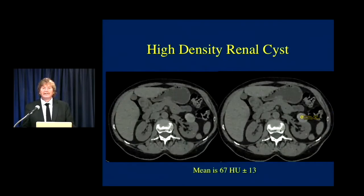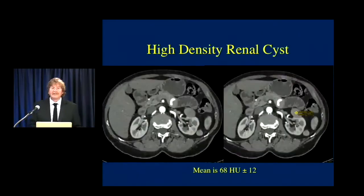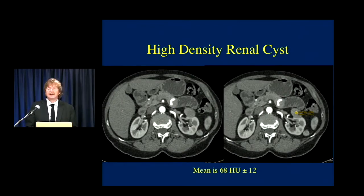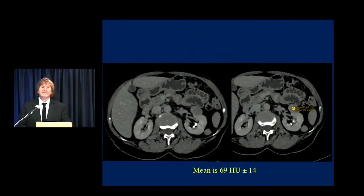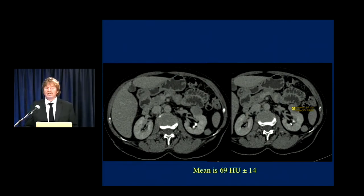When you give IV contrast, a high-density renal cyst does not change its attenuation. Here's an example: a lesion in the left kidney measures 67 Hounsfield units on non-contrast. On contrast, it measures 68, and on delayed phase it's 69 — it does not change attenuation. That is classic for a high-density renal cyst. If you only had the contrast phase and saw a mass measuring 68 Hounsfield units, you might call it a papillary renal cell carcinoma. With non-contrast, arterial, and delayed together, you see a benign lesion. Without non-contrast, you might have resected that lesion.